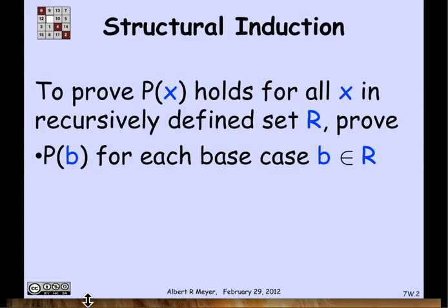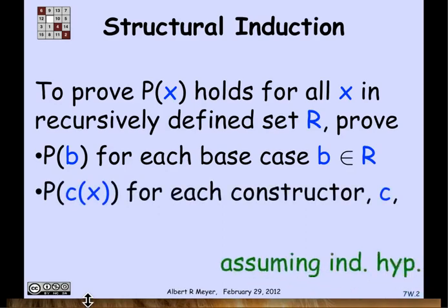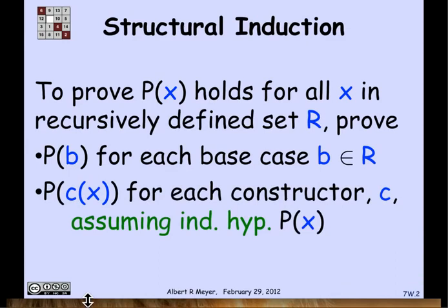Moreover, if you apply a constructor to an element x, then it has property P whenever x has property P. That is, you can assume as a structural induction hypothesis P of x, and then you need to show that P of c of x holds. This applies for each constructor c. Some constructors take more than one argument, but this is meant to illustrate the general pattern.